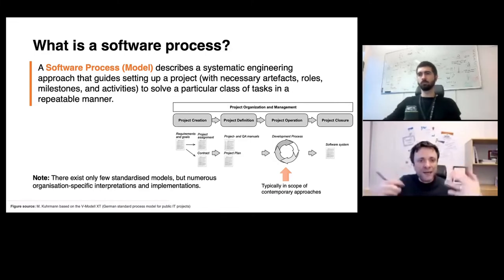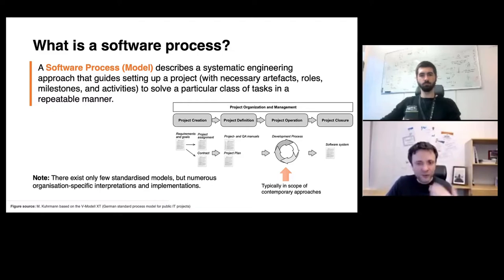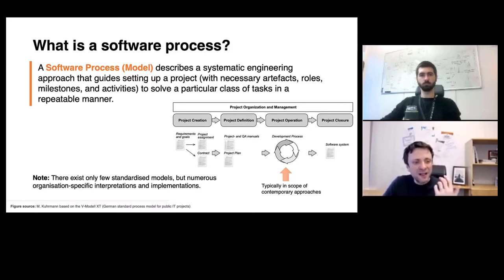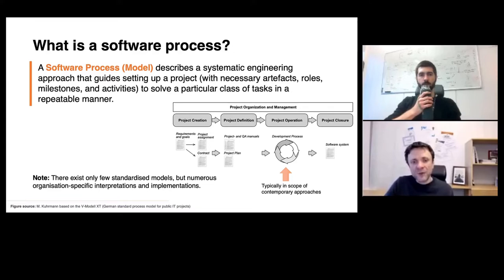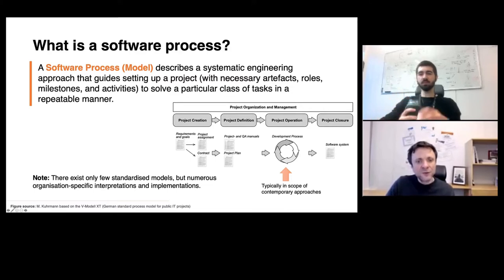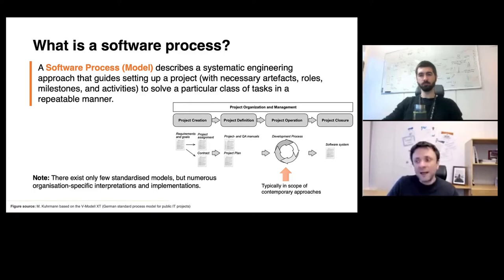One thing to understand about software process models is that there don't exist so many standards, but many different organization-specific interpretations. You cannot use a software process model as-is out of the box; it has to be integrated into a larger organizational context and adopted to the needs of different projects. The figure here shows one example from a German standard software process model, intended for all public governmental IT development projects.